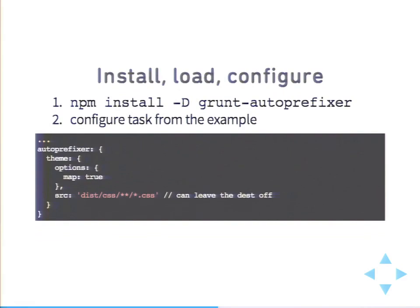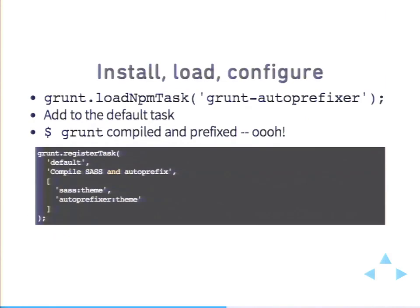I found one that showed how to use the source map, which is really nice for debugging where things came from, and just pointed it to the CSS directory. If you leave off the destination, it'll just go ahead and auto-prefix the file itself, so you don't have to worry about moving it to a temporary location and moving it back. Then I do the loadNpmTasks and append it to the default task.